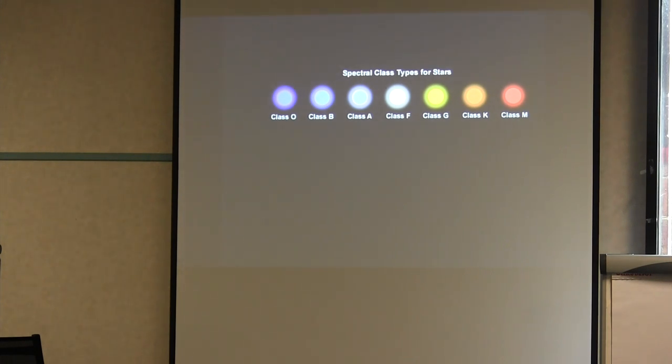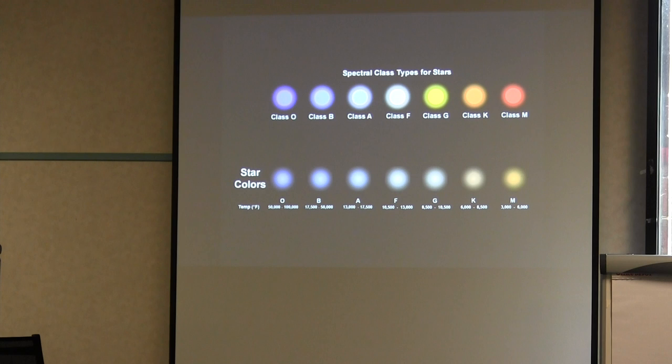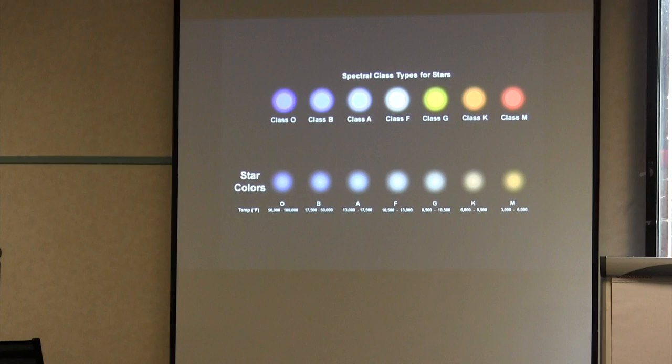When you see it in your textbooks, you will see this bright blue for the O stars and this bright red for the M stars. What do they really look like? If you take the temperature of the star and you pass it through the cones of the eye that are sensitive to red, green, and blue, the true colors look more like this. There is some bluishness to it.